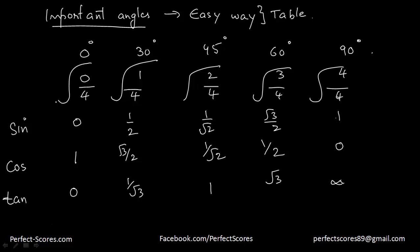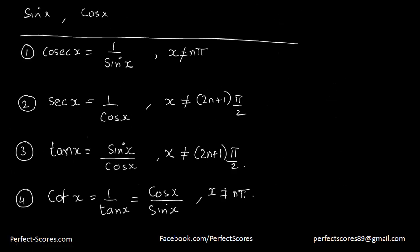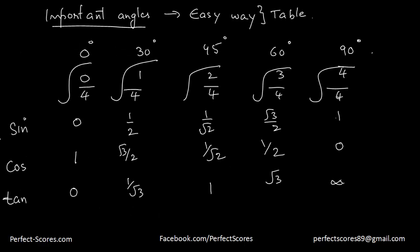So this is how you draw the table. Just write 0, 1, 2, 3, 4, and then you divide by 4 and then you take the square root all over. Now the values of cosecant x, secant x, and cotangent x is something that you can find out by reciprocating sine, cos, and tan.